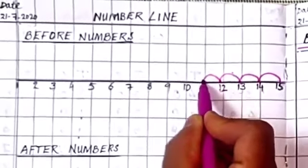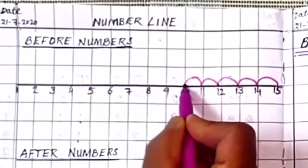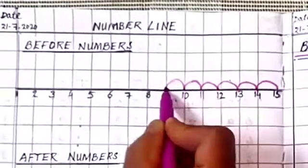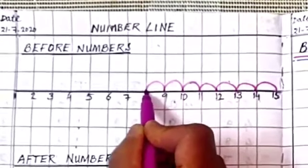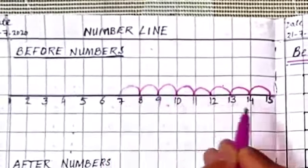Before 12, 11. Before 11, 10. Before 10, 9. Before 9, 8. Before 8, 7. So like this we will go.